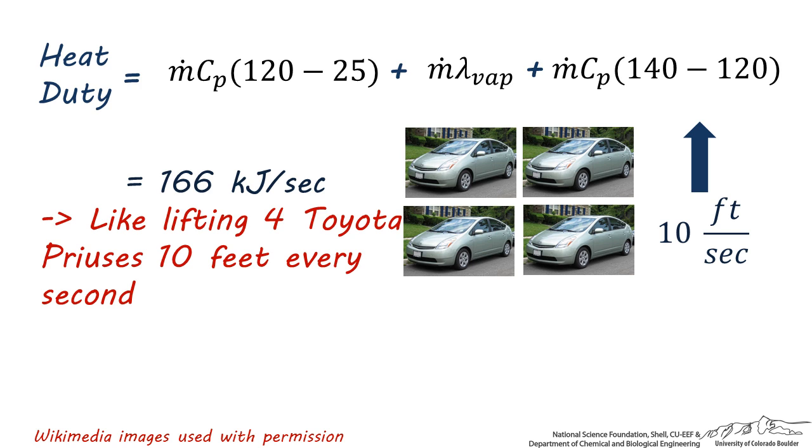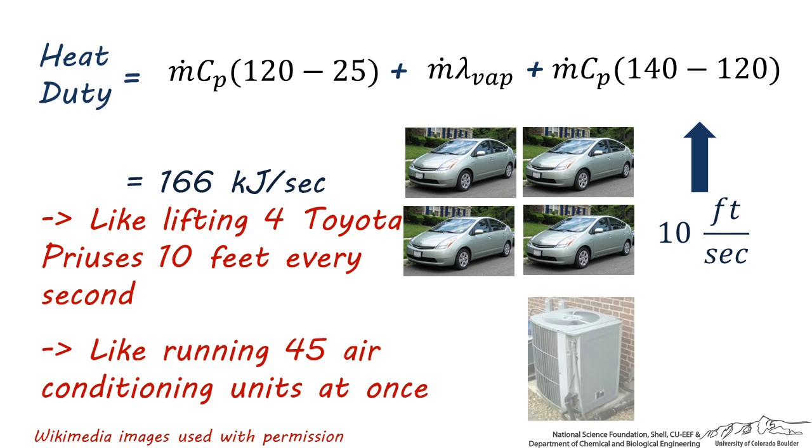Thinking about it in terms of a power requirement, 166 kilojoules per second is equivalent to running 45 outdoor air conditioner units at the same time. So it's easy to see that heating and vaporizing even a low flow rate stream like this one that might be coming out of your bathroom faucet requires a tremendous amount of energy every second.